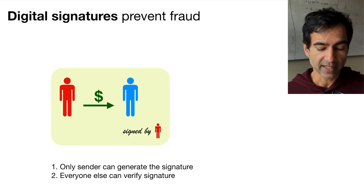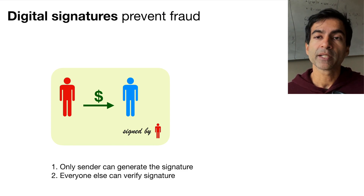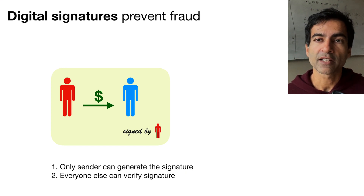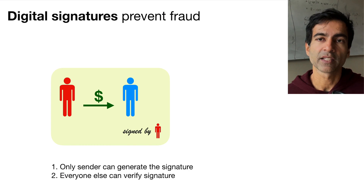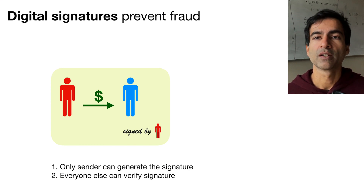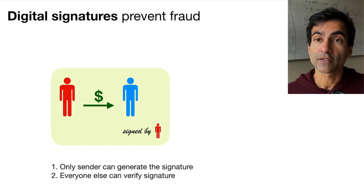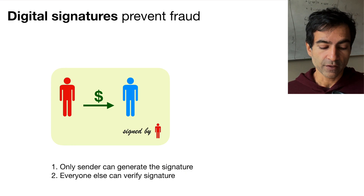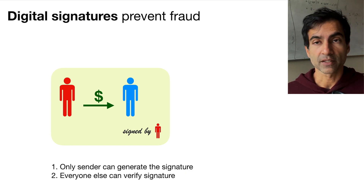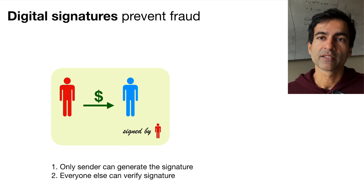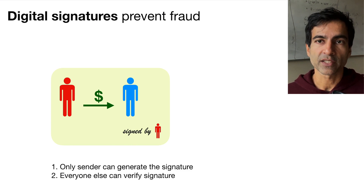The second property is that everybody who sees the signature can be confident that the sender actually did sign this transaction — they can verify that the signature was generated by the sender. This is a really important cryptographic primitive, and it's very useful here because if we require that all transactions are signed by the sender, then we can be confident that there's no fraud and there are no fake transactions.